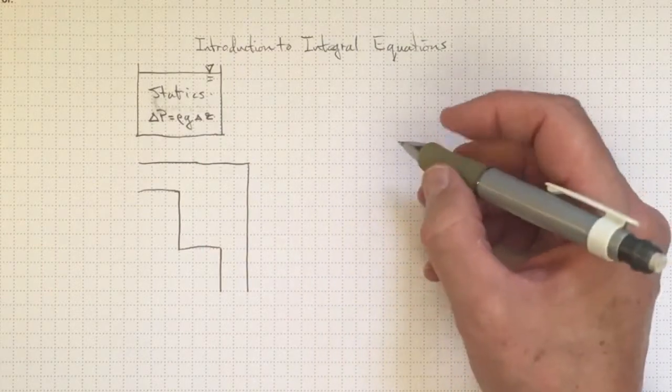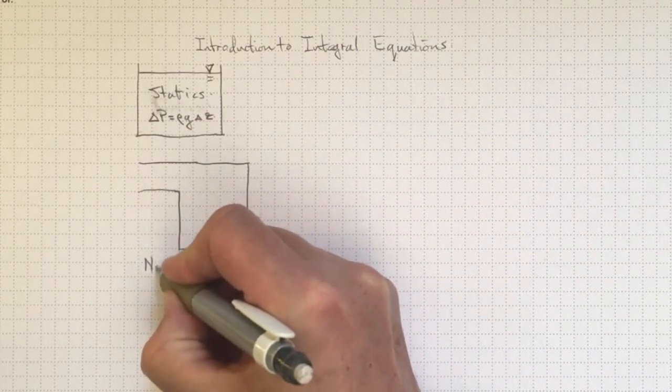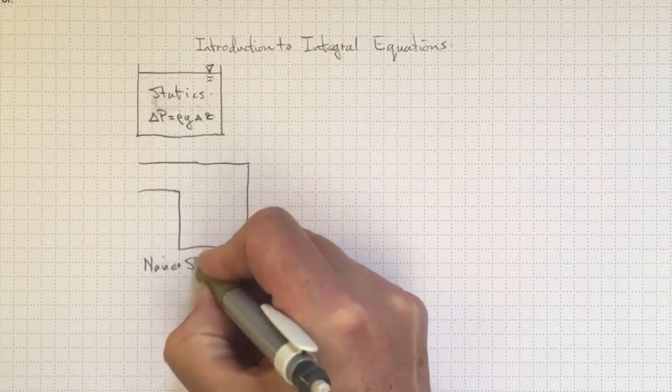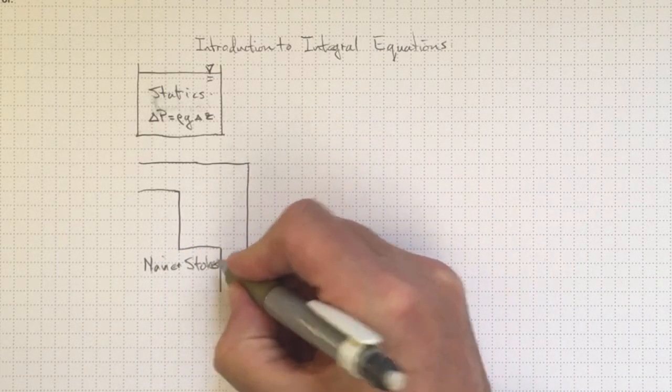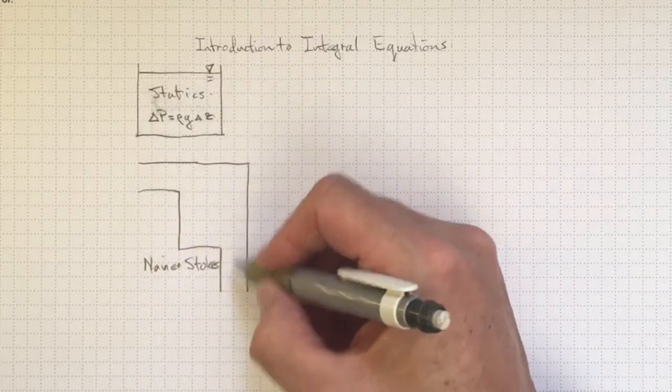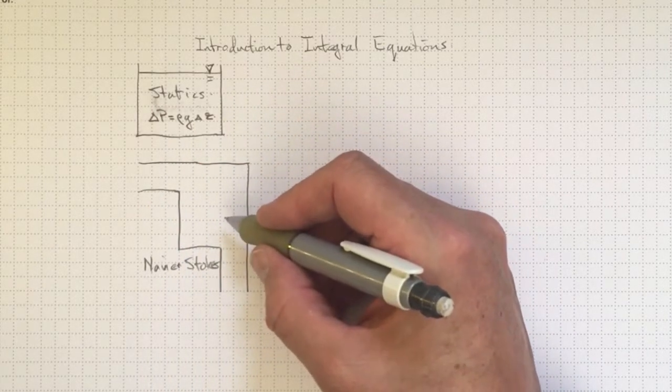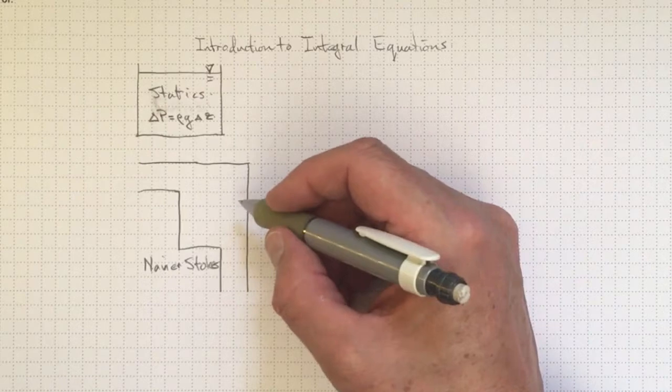Next we had a look at Navier-Stokes equations and the continuity equation, and we looked in detail at what was going on in more complex flows and found that that was fairly difficult to keep track of.